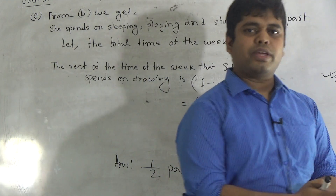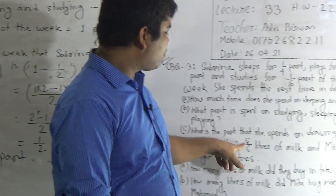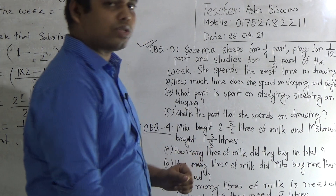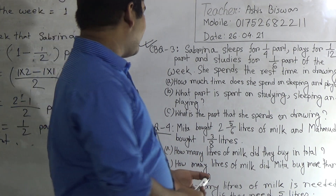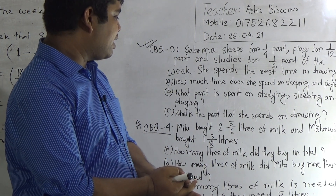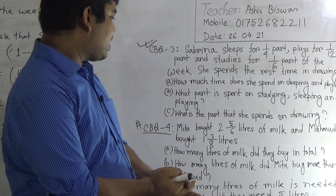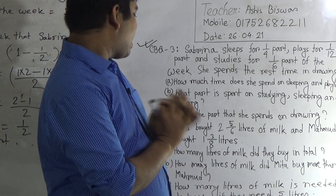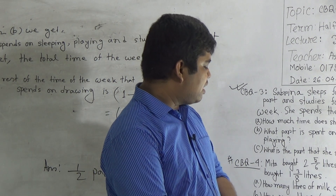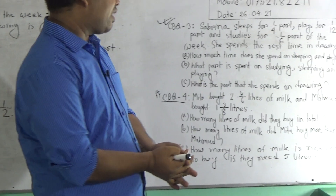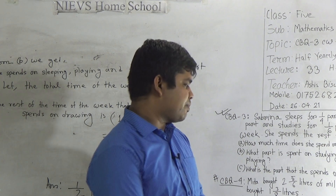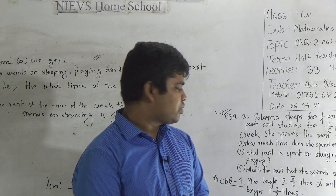CBQ 4 will be your homework. Meeta bought 2 and 5/6 liters of milk, and Mahamud bought 1 and 3/8 liters. Question A: how many liters of milk did they buy in total? — We add Meeta's and Mahamud's amounts. Question B: how many liters of milk did Meeta buy more than Mahamud? — We subtract Mahamud's amount from Meeta's. Question C: how many more liters are needed if they require 5 liters in total? — We subtract their total from 5 liters.